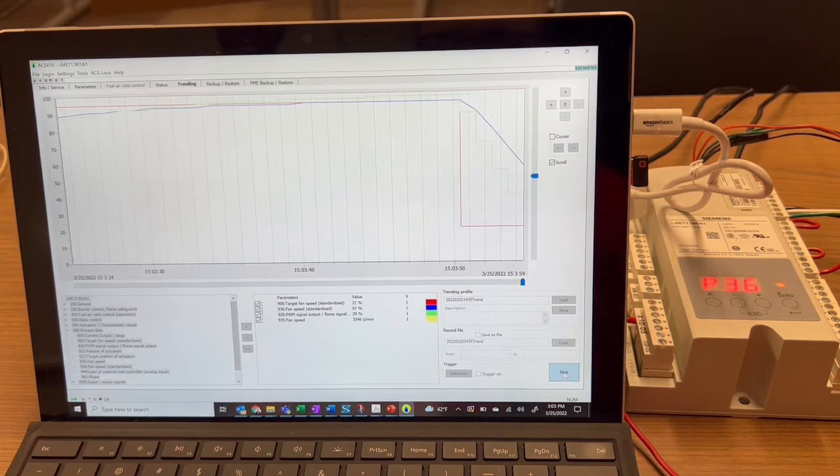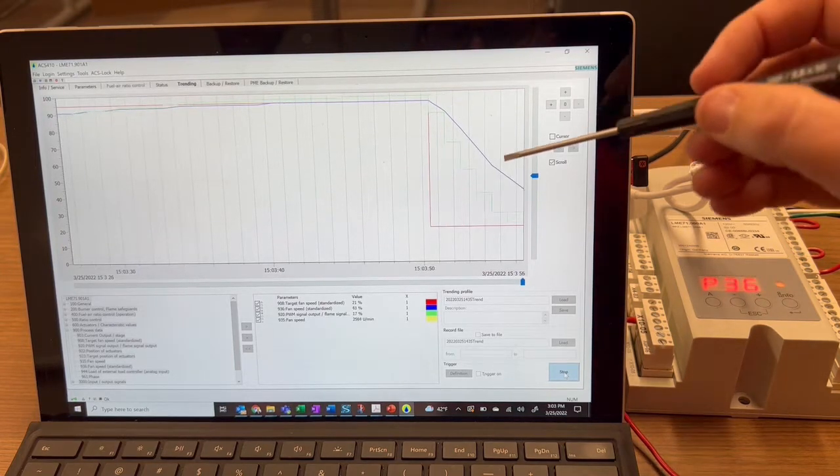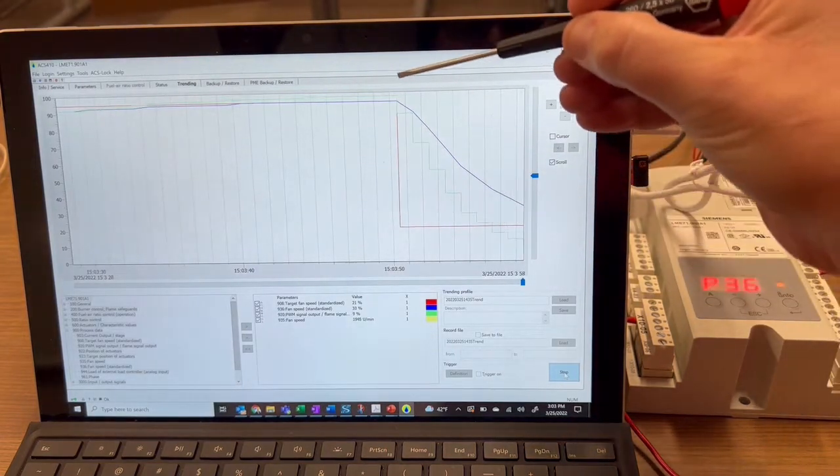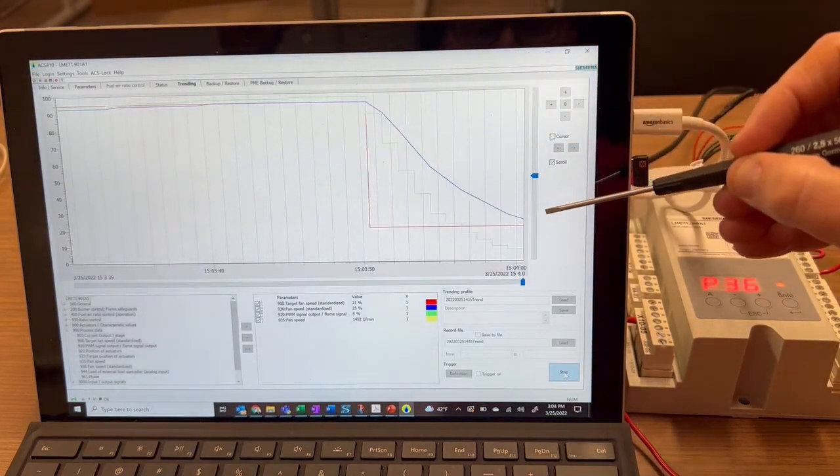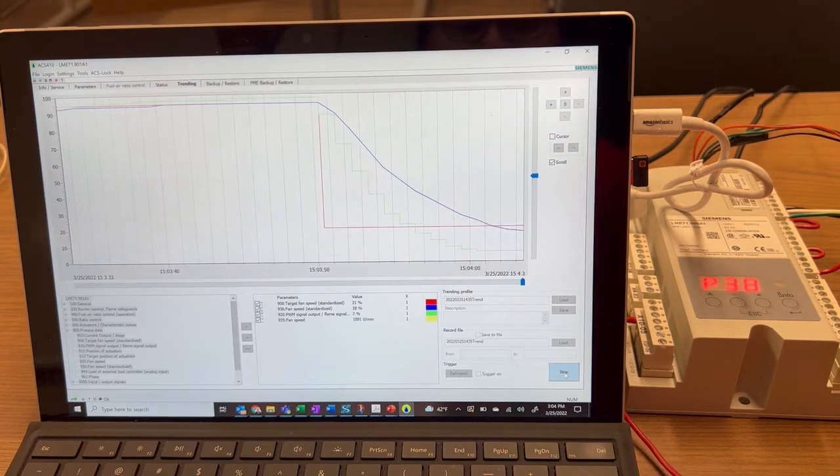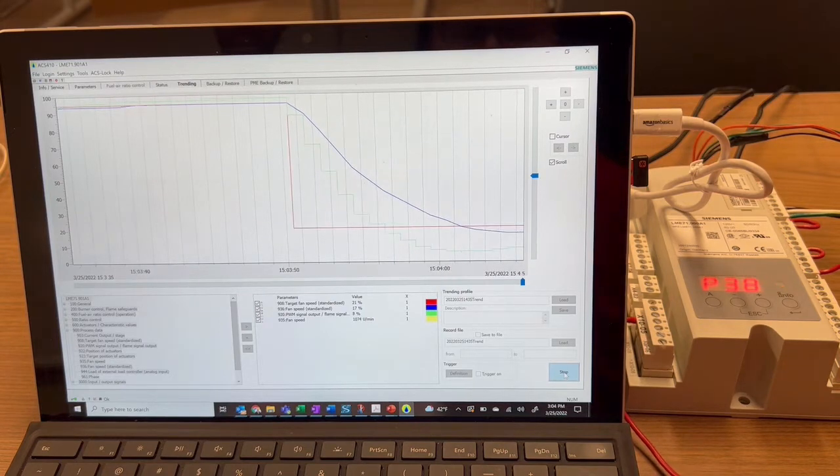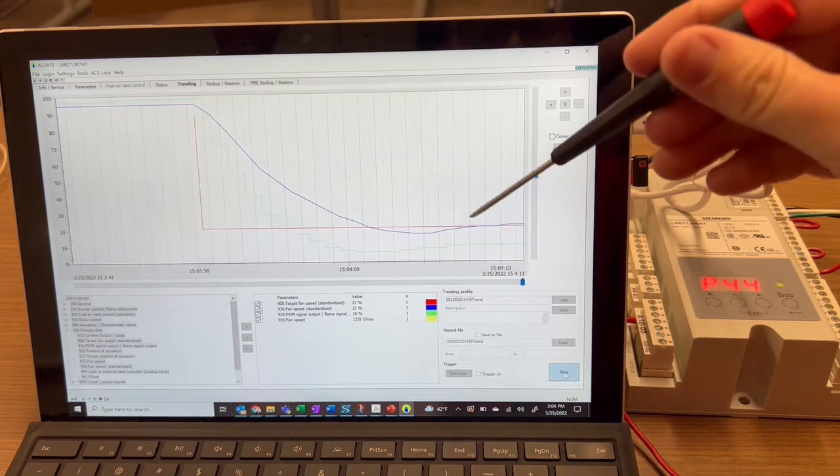We're now driving to ignition speed. We see the target speed dropped and the actual speed, the blue, is going down. Now the trial for ignition. The blower speed undershoots and then it settles out a little bit.